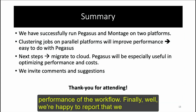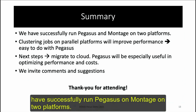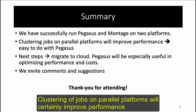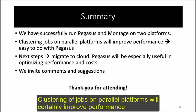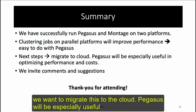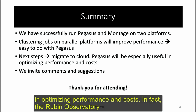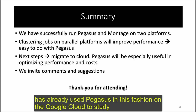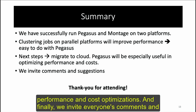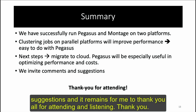We are happy to report that we have successfully run Pegasus on Montage on two platforms. Clustering of jobs on parallel platforms will certainly improve performance, and this is easy to do with Pegasus. As our next step, we want to migrate this to the cloud, where Pegasus will be especially useful in optimizing performance and costs. The Rubin Observatory has already used Pegasus in this fashion on the Google Cloud to study performance and cost optimizations. We invite everyone's comments and suggestions, and thank you all for attending and listening.